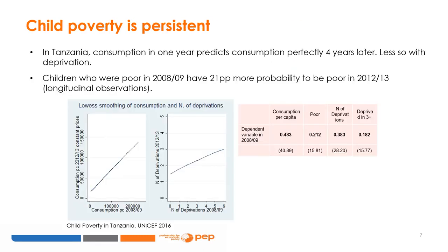Second, child poverty is persistent. Here we see an example from Tanzania. We see both monetary poverty and deprivation, which will be discussed in the next module. Consumption in one year predicts consumption four years later for children, and children who were poor in 2008-2009 are 21 percentage points more likely to be poor four years later, even when controlling for factors such as household composition and education of the parents.